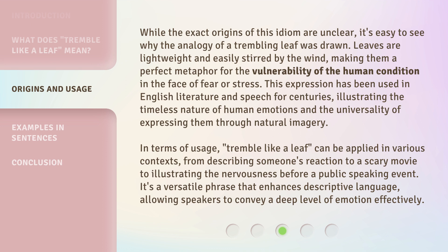In terms of usage, 'tremble like a leaf' can be applied in various contexts — from describing someone's reaction to a scary movie, to illustrating the nervousness before a public speaking event. It's a versatile phrase that enhances descriptive language, allowing speakers to convey a deep level of emotion effectively.